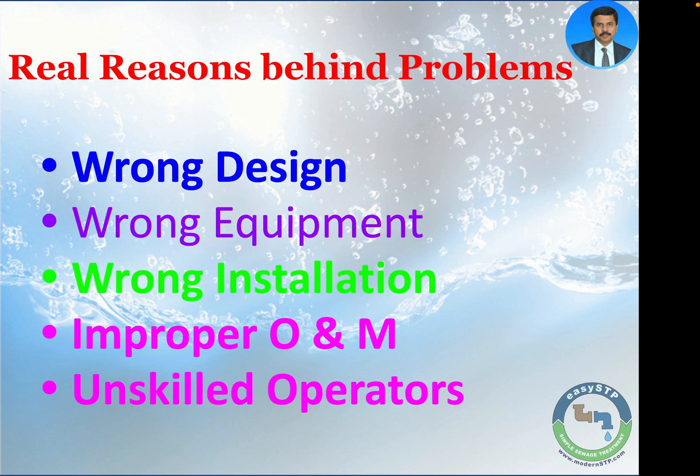These are the symptoms. What are the real reasons behind these problems? The number one reason is the wrong design of the STP — hard to believe, but even when designed by professional STP vendors, vetted by MEP consultants and architects, wrong design is the number one culprit. Then comes wrong selection of equipment — equipment may not be suitable for that location. Then wrong installation. And if everything else is alright, improper O&M is the cause. Your operation and maintenance contractor may not be hiring the right kind of manpower, and problems persist.